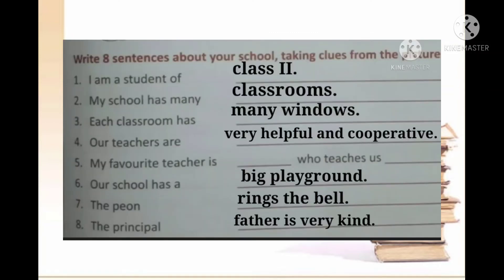Next, write eight sentences about your school taking clues from the picture. First: 'I am a student of class second.' Second: 'My school has many blank' — for example, many classrooms. Third: 'Each classroom has blank' — you can write many windows, many desks and tables. Fourth: 'Our teachers are very helpful and cooperative.' Fifth: 'My favorite teacher is blank, who teaches us blank' — write the subject. Sixth: 'Our school has a big playground.' Seventh: 'The peon rings the bell.' And last: 'The principal is very kind.'